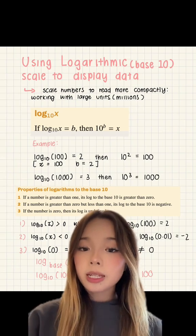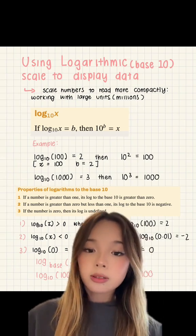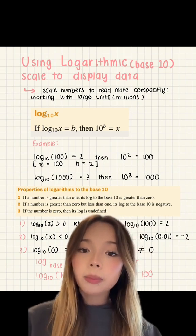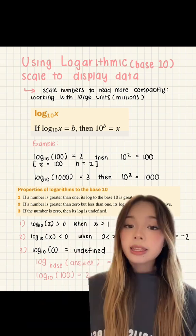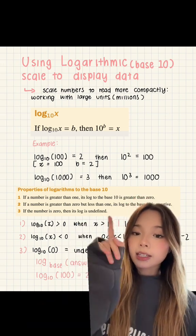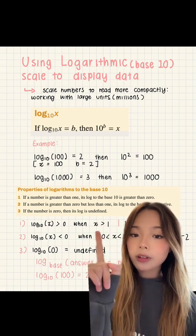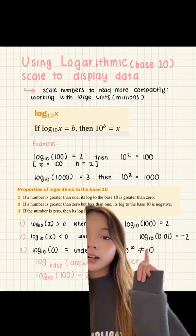Now there are three properties that we need to look at when using logs. The first property is that if a number is greater than 1, its log to the base 10 is greater than 0. This can be written algebraically like so. Log 10x is greater than 0 when x is greater than 1. For example, log 10 of 100 equals 2.